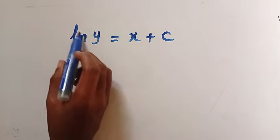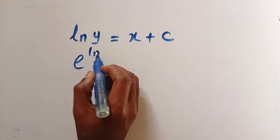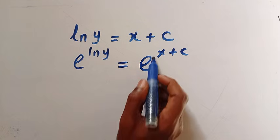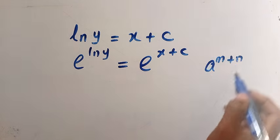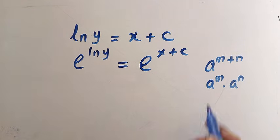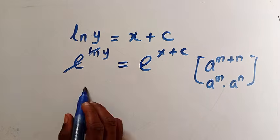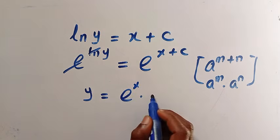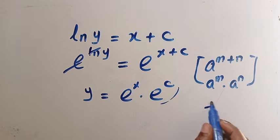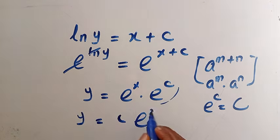We have to get y. The only way we can cancel this ln is by introducing the exponential to both sides. So we have e to the power of ln y equals e to the power of x plus c. Now, using the basic rule of exponents, a raised to m plus n equals a raised to m multiplied by a raised to n. So the exponential and ln cancel, giving y equals e to the x multiplied by e to the c. Since e to the c is a constant, letting e to the c equal capital C, we have y equals C e to the x.